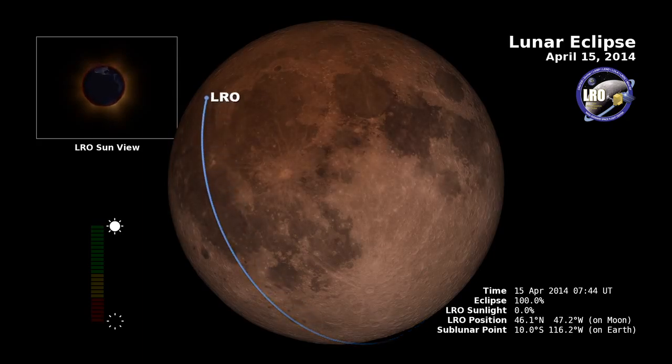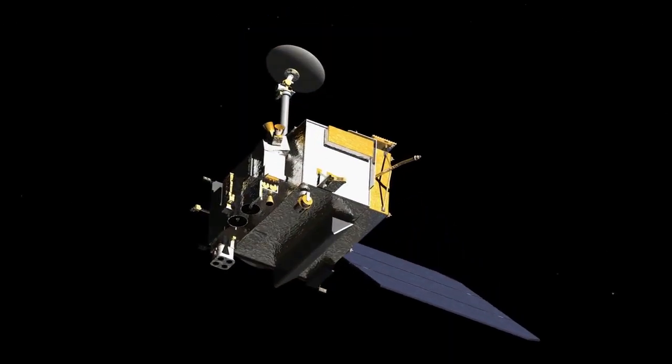We'll be monitoring real-time how the battery is doing during the eclipse, but we won't be making any scientific observations during this eclipse. When the spacecraft comes out of the eclipse, the battery will slowly charge back up again, and then we can turn the instruments back on.